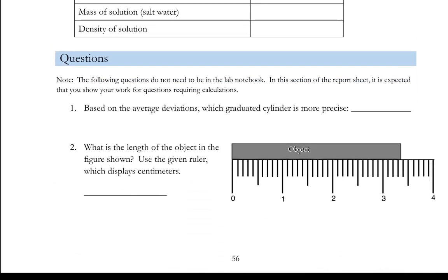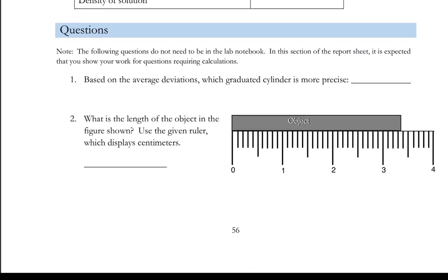For the questions, you can skip question 1, but do question 2. Notice that question 2 has you measuring the length of an object using a ruler, much like we did in the experiment. The length is between 3 and 4 centimeters, and there's 10 divisions between 3 and 4. So we can get precisely some of those numbers, and then we read between the lines to get the last number.